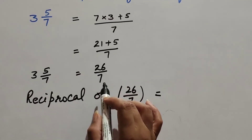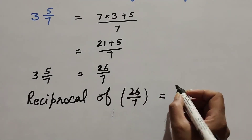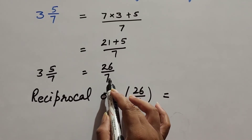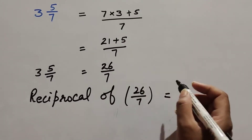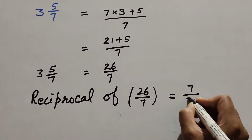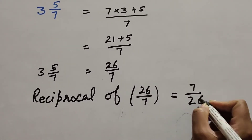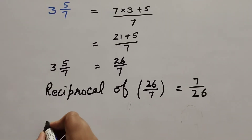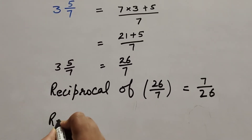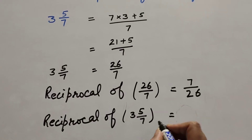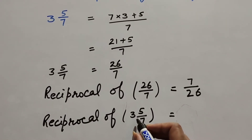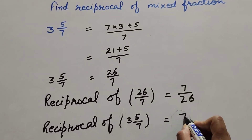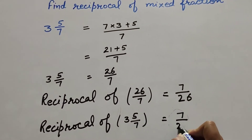When we interchange the numerator and denominator of 26/7, the reciprocal becomes 7 over 26. So the reciprocal of the mixed fraction 3 and 5/7 is 7 upon 26.